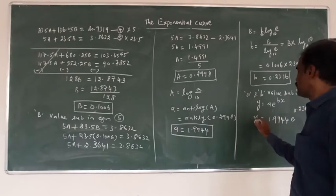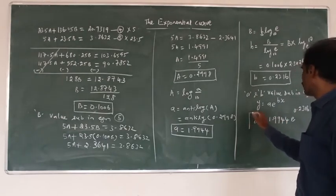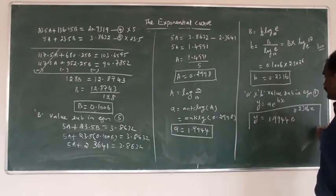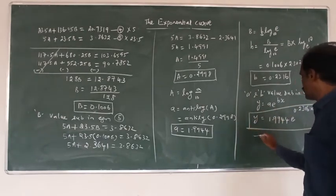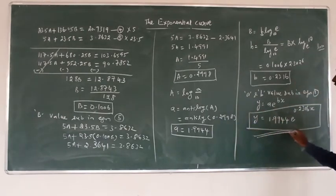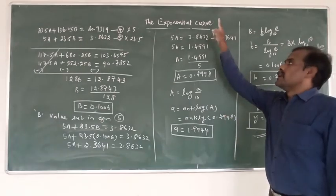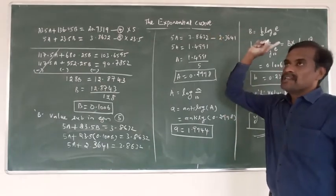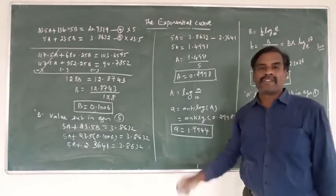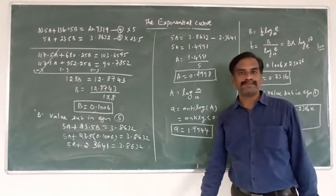Substituting small a and small b into equation 1: y = 1.9944 · e^(0.2316x). This is the exponential curve fit. Thank you.